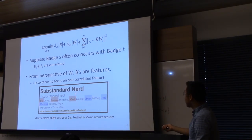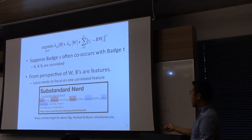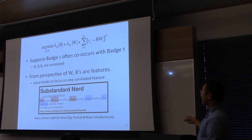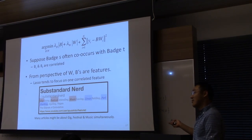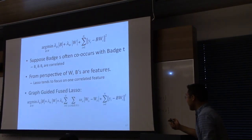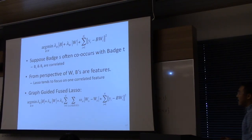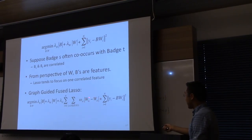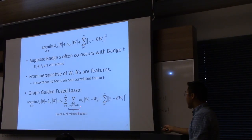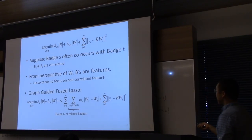A given document tweeted by a certain user might be about music, festival, or gig simultaneously because these are highly correlated badges. Lasso tends to focus on only one of them and zero out the rest, which is not what we want. We want all these badges to learn something interesting. So there's an extension in the paper using something called graph-guided fuse lasso. The idea is that we have a graph of related badges, and we want the feature activations of related badges for a given article to be similarly active.